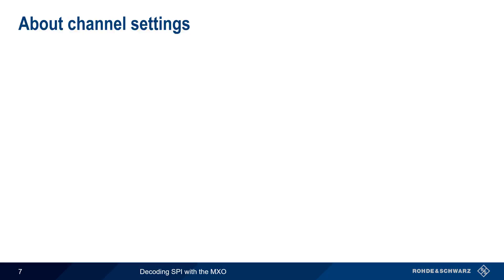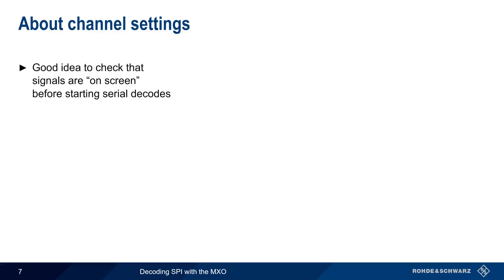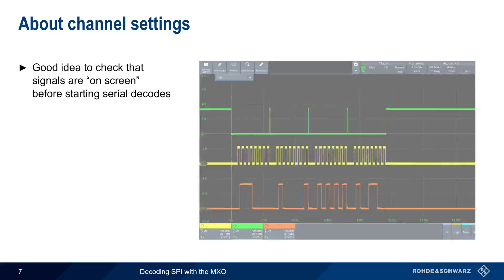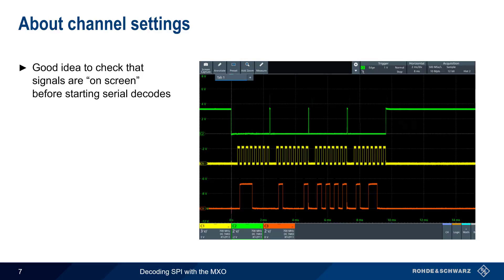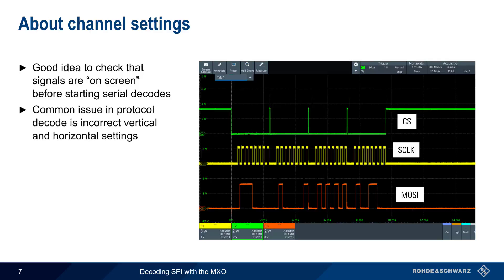At this point, let's pause to talk about channel settings. Before starting serial decodes, it's always a good idea to first check that each of the SPI channels is on screen. In this example, the channels connected to the chip select, clock, and MOSI lines all appear on the screen with appropriate vertical and horizontal scaling. The most common issue in serial decoding is incorrect vertical and horizontal settings, such as the wrong time base or volts per division settings, so it's best to visually verify that the signals are on screen and these settings are configured appropriately.